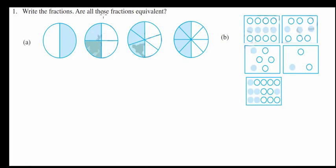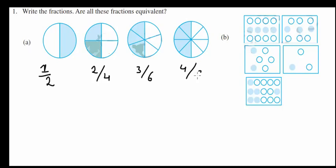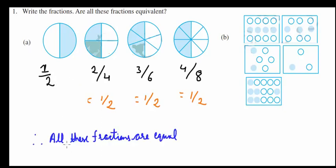Question one: are all these fractions equivalent? We are given four fractions. The first one is half shaded, so 1 over 2. Similarly, we have 2 out of 4 parts shaded, then 3 out of 6, and finally 4 over 8. All of these are reducible to 1 over 2. The circles are perfectly equally shaded, so all have half shaded. Therefore, we conclude all these fractions are equal.